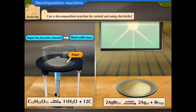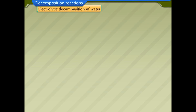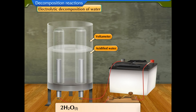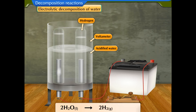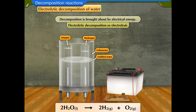Can a decomposition reaction be carried out using electricity? Yes — let us see whether water can be decomposed using electricity. Electrolytic decomposition of water: take acidified water in a voltmeter and pass electric current through it. Water splits into hydrogen and oxygen. This decomposition is brought about by electrical energy, hence this reaction is known as electrolytic decomposition or electrolysis.